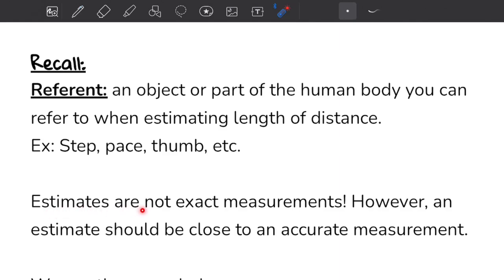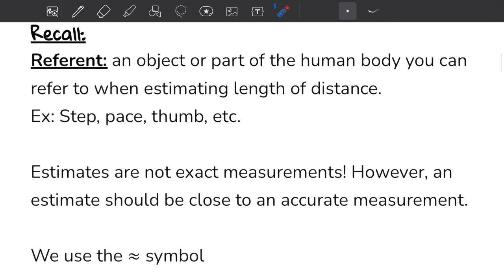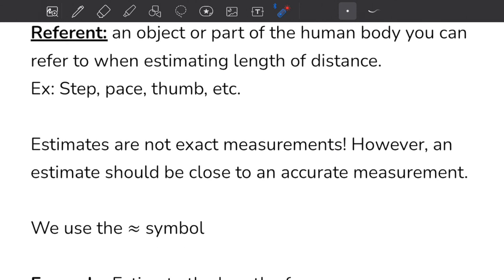Now estimates are not exact measurements, because keep in mind that the length of maybe your step is different than the length of my step. I'm a fairly short person, I'm 5'2 with short legs, so one step for me is about 70 centimeters. But somebody taller with longer legs, it might be 100 centimeters. However, your estimates should be reasonable. They should be close to the accurate measurement. So it wouldn't make any sense if you estimated the distance of your room to be 90 centimeters but in reality it was like 5 meters.